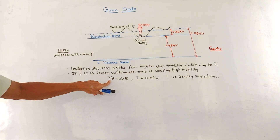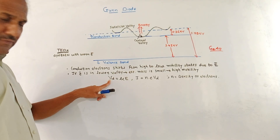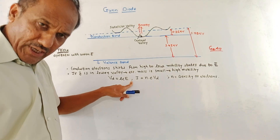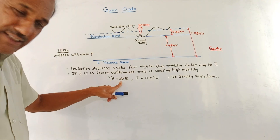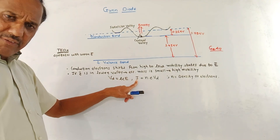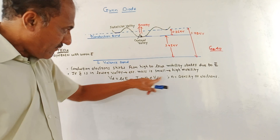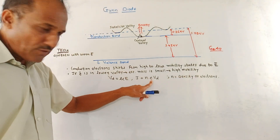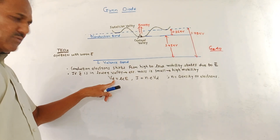There is one equation for drift velocity: Vd equals mu times E, where E is the applied electric field and mu is the mobility. The conductivity is given by J equals N·e·Vd, where N is the density of electrons and e is the charge of the electron. So we can write the current density as J = N·e·mu·E.